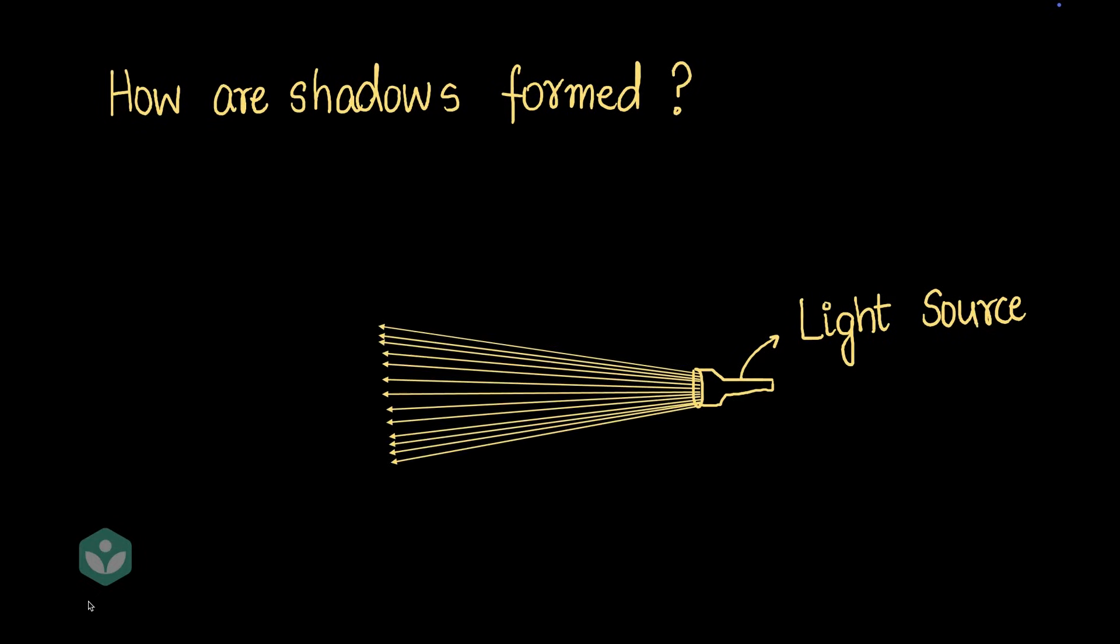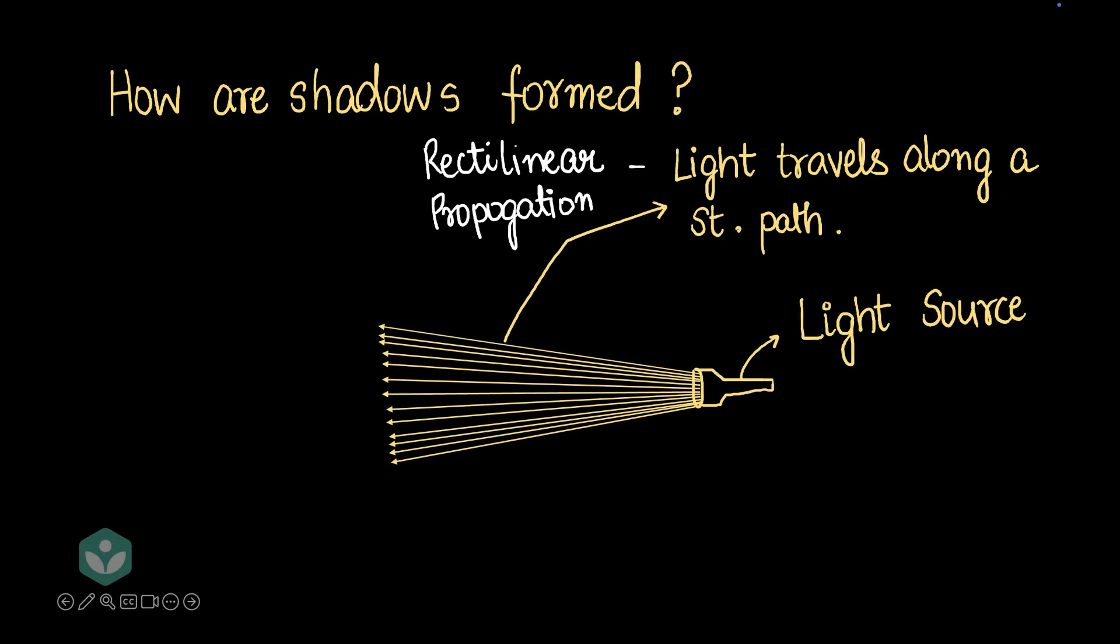You'll notice that light rays like these start emanating from the bulb. And light travels in a straight path. You know that already. And that's got a fancy name. They call it rectilinear propagation of light.